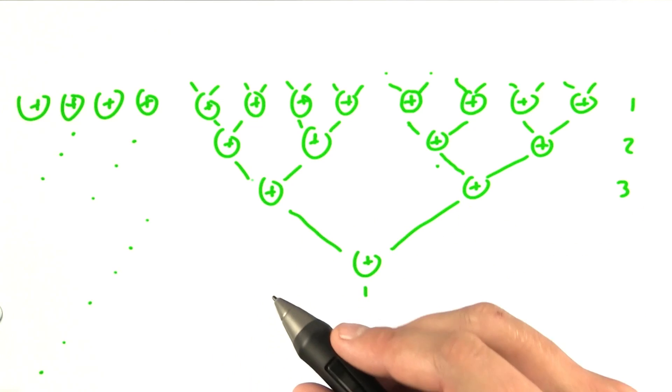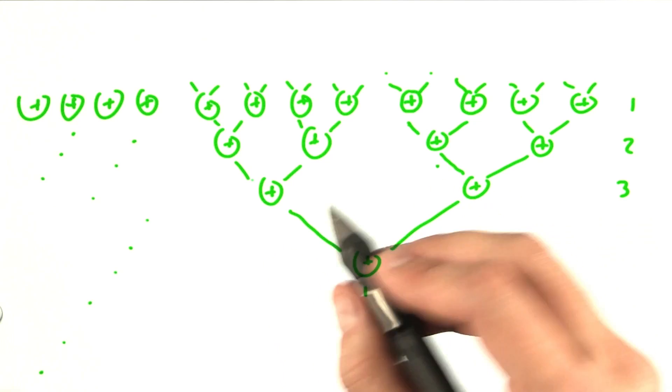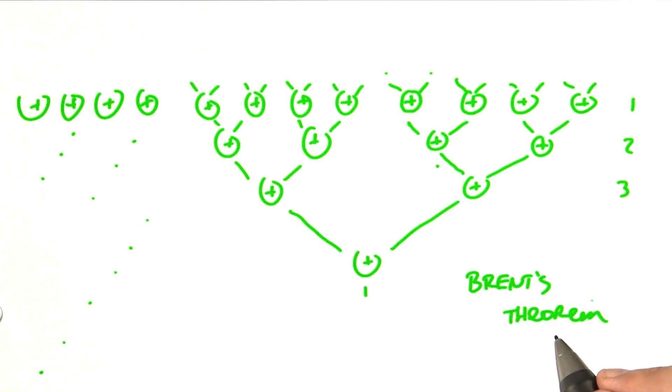It's a good exercise to work out how many steps it takes to run this algorithm for an input of size n if you have only P processors. This is called Brent's Theorem, which the interested student will want to look up and perhaps discuss on the discussion forum.